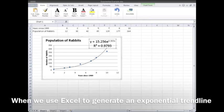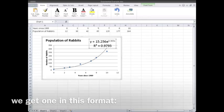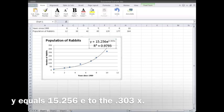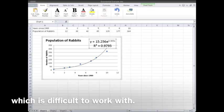When we use Excel to generate an exponential trend line, we get one in this format: y equals 15.256e to the .303x, which has the e in it, which is difficult to work with.